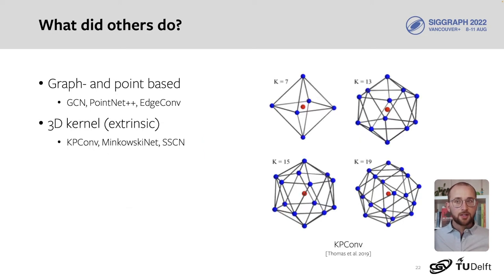Many works use extrinsic convolutions and create filter kernels in 3D. A well-known example is KPConv, which can also optimize the location of kernel points to fit to the surface. While these filters can be anisotropic, they are not intrinsic, so this is orthogonal to our goal.